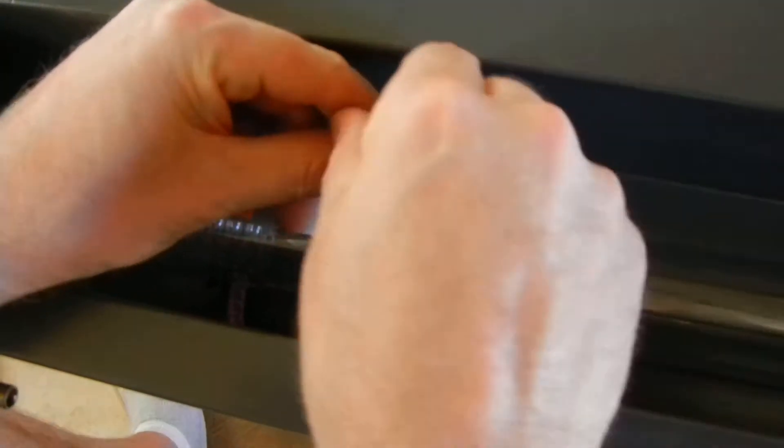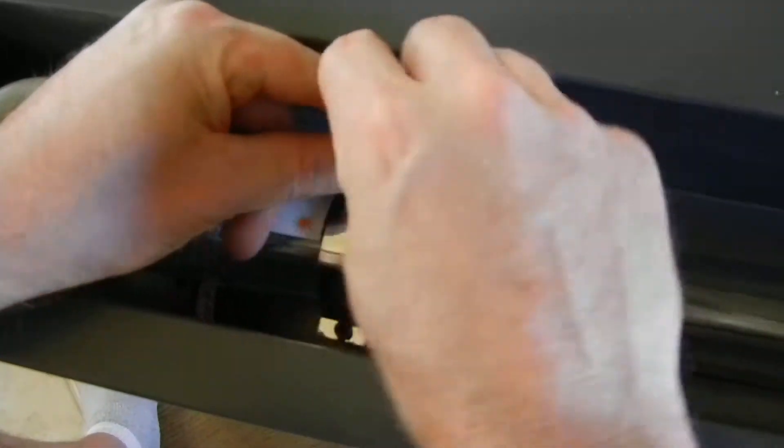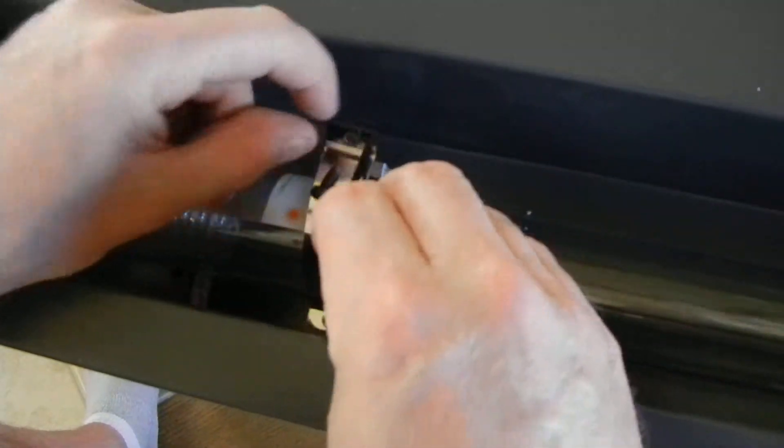They're going to have two brackets holding them down. Here's the second one. I've already taken the screw off this one and I left this one for the last. Basically you're just going to need an Allen wrench. On most of these at least they have Allen wrench screws.